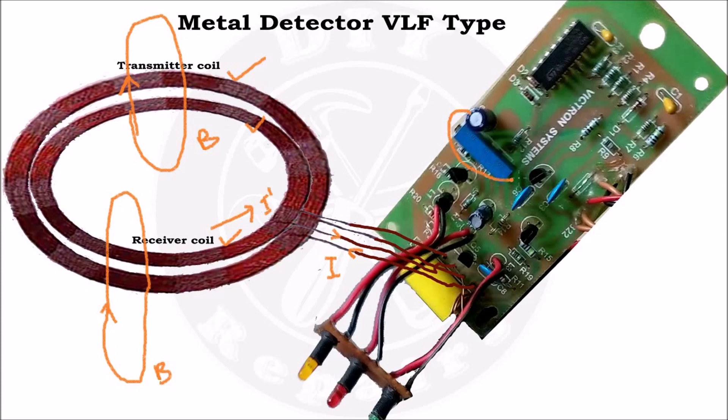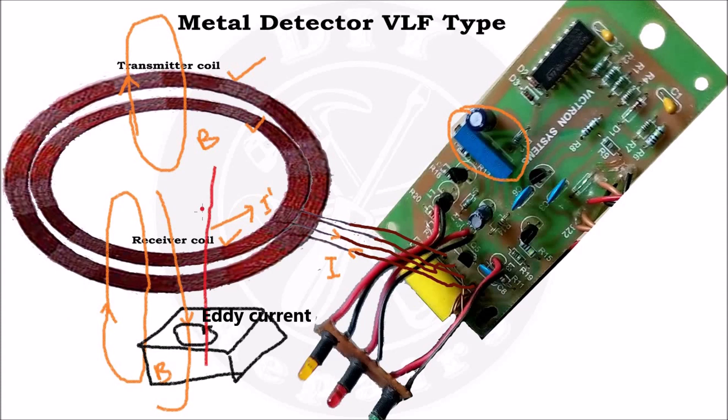This 1 kOhm preset is adjusted in such a way as to cancel out the phase differences between the primary and secondary currents. But when a metal object comes close to the coil, the magnetic field generated by the transmitter coil interacts with the object and induces an eddy current in it, which in turn generates a secondary magnetic field. The receiver coil then interacts with this magnetic field and produces a current proportional to the strength of the field.